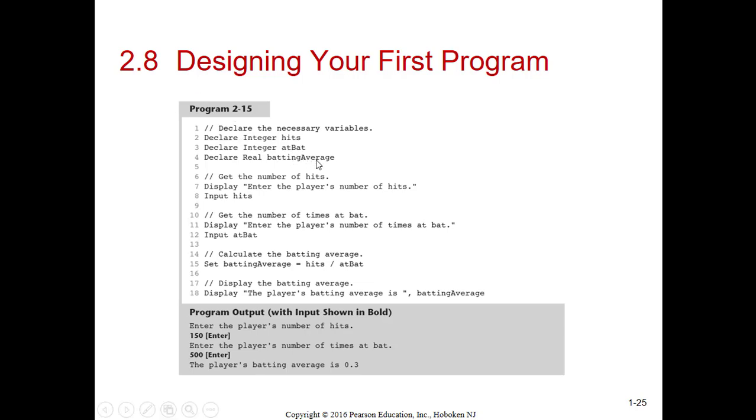Here's the three declares: hits, at bats, and batting average, and this is the way you get it. Notice how the comment they have here - get the number of hits, display, and input. So to get something from the user, you want a display statement to tell the user what to input, and then you want the input statement to grab it from the user and put it in memory. So they got the hits and at bats. Then on line 15, they calculated it. Line 18, they outputted it.